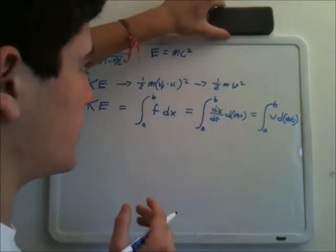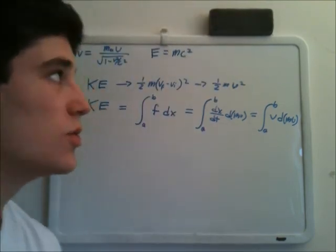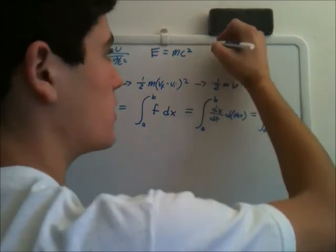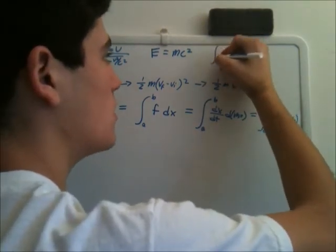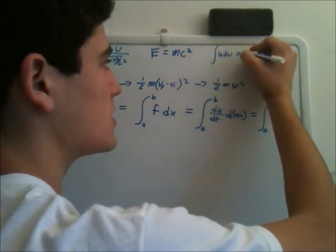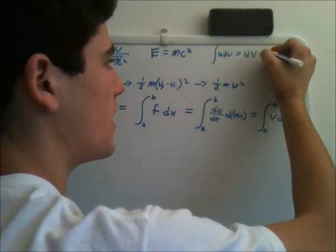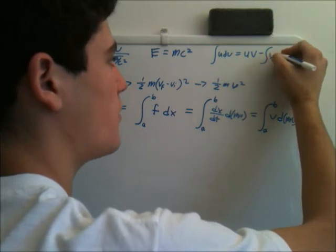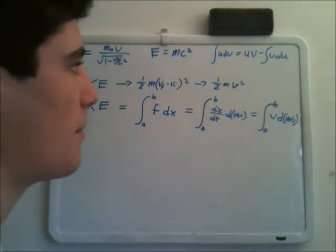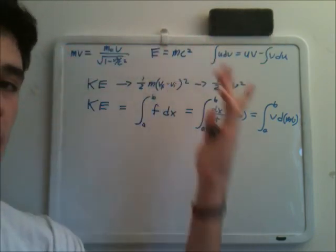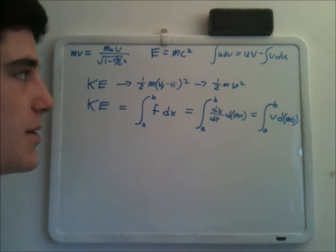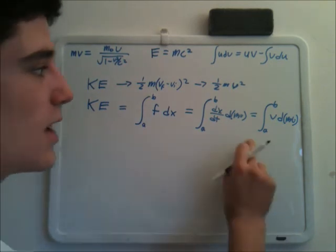And now if we want to solve this, we're going to have to use integration by parts. Which basically says, in short, that the integral of u dv equals u times v minus the integral of v du. I might put this up if you don't understand, if you don't know how to use integration by parts. I'm probably also going to put up a video that explains that, but in the meantime, I'm just going to assume that you do and let's do this integral.